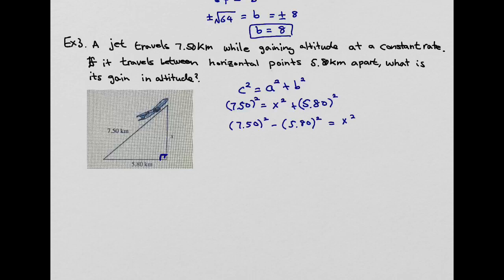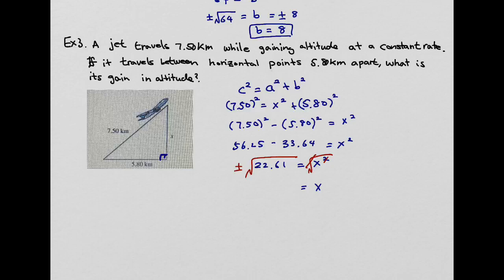Solving: 7.50 squared gives 56.25, and 5.80 squared gives 33.64. So X squared equals 56.25 minus 33.64, which gives 22.61. Taking the square root of both sides to eliminate the square, and since we're talking about distance we only use the positive value, X equals the square root of 22.61, which is approximately 4.75 kilometers. So the jet's gain in altitude is positive 4.75 kilometers.